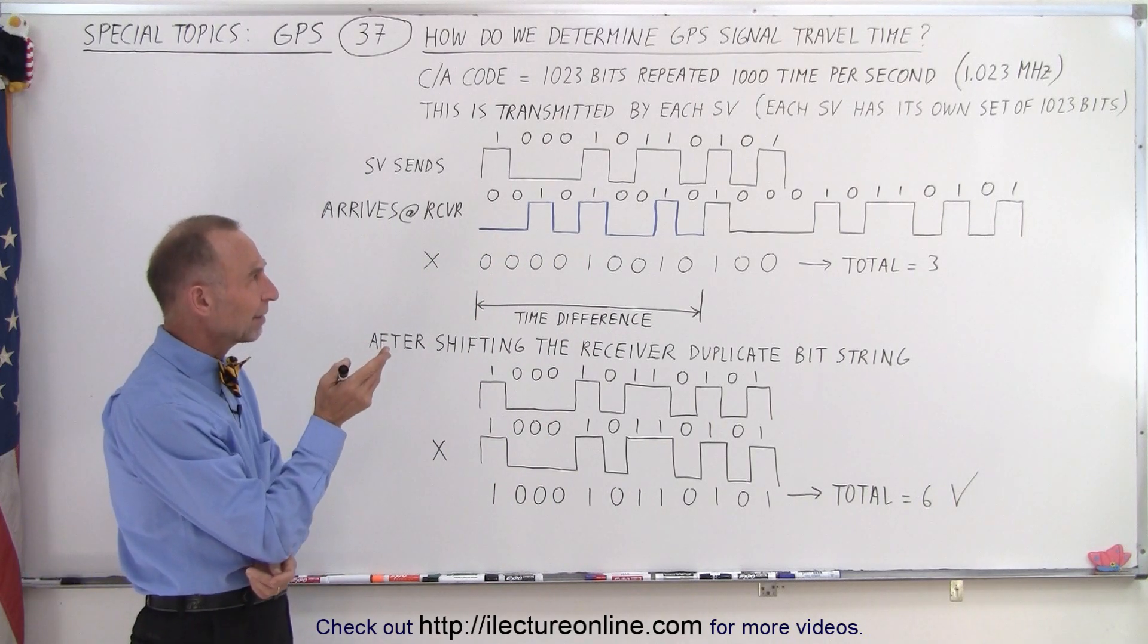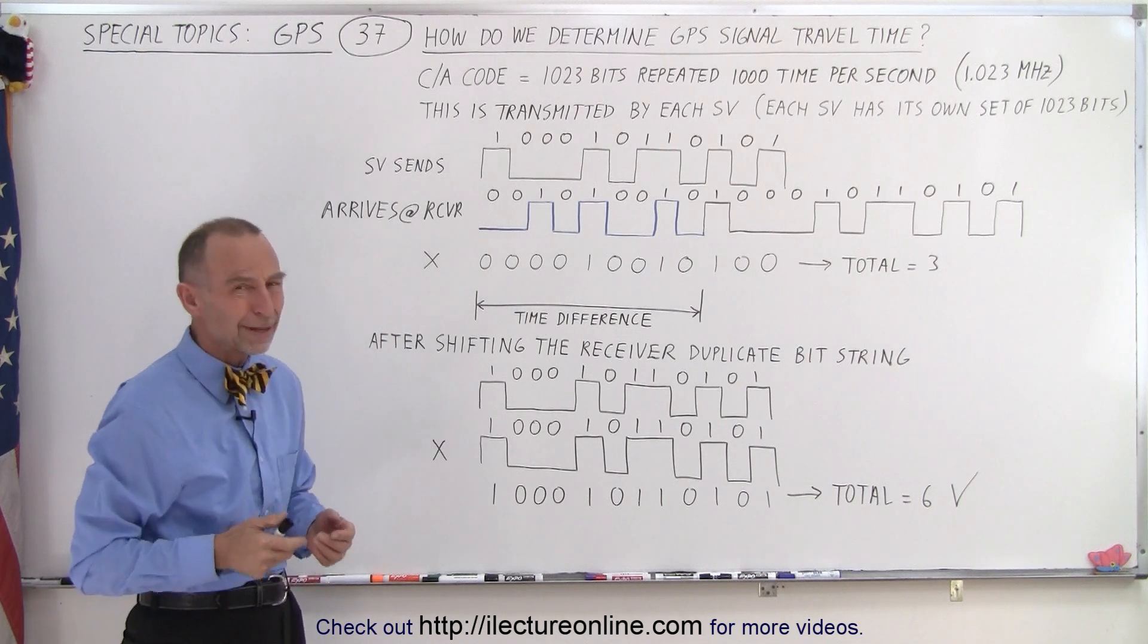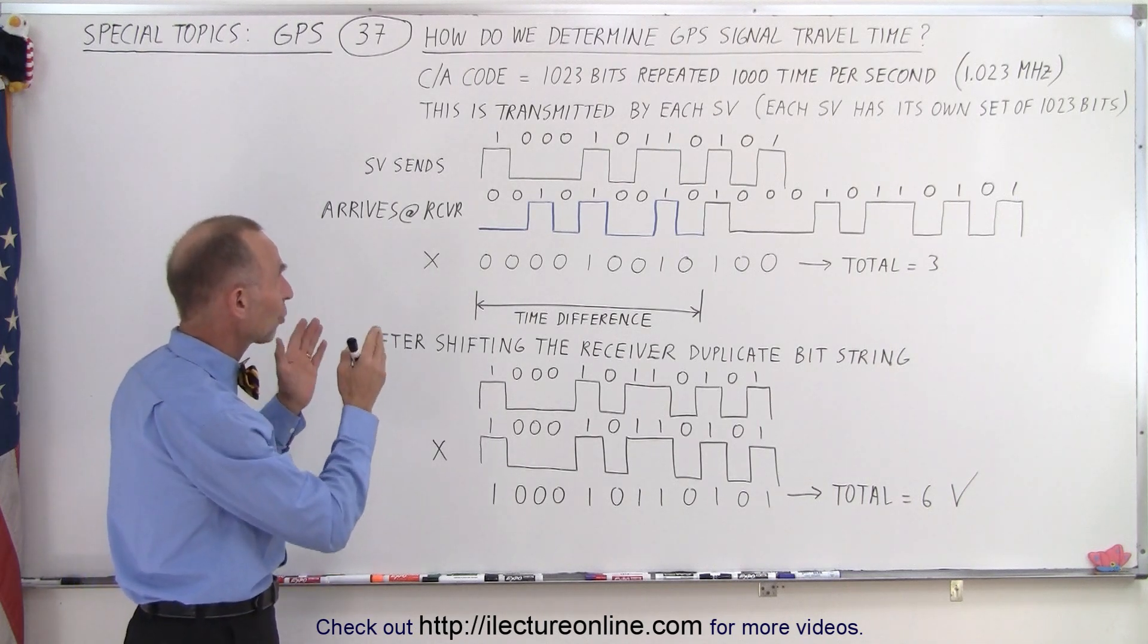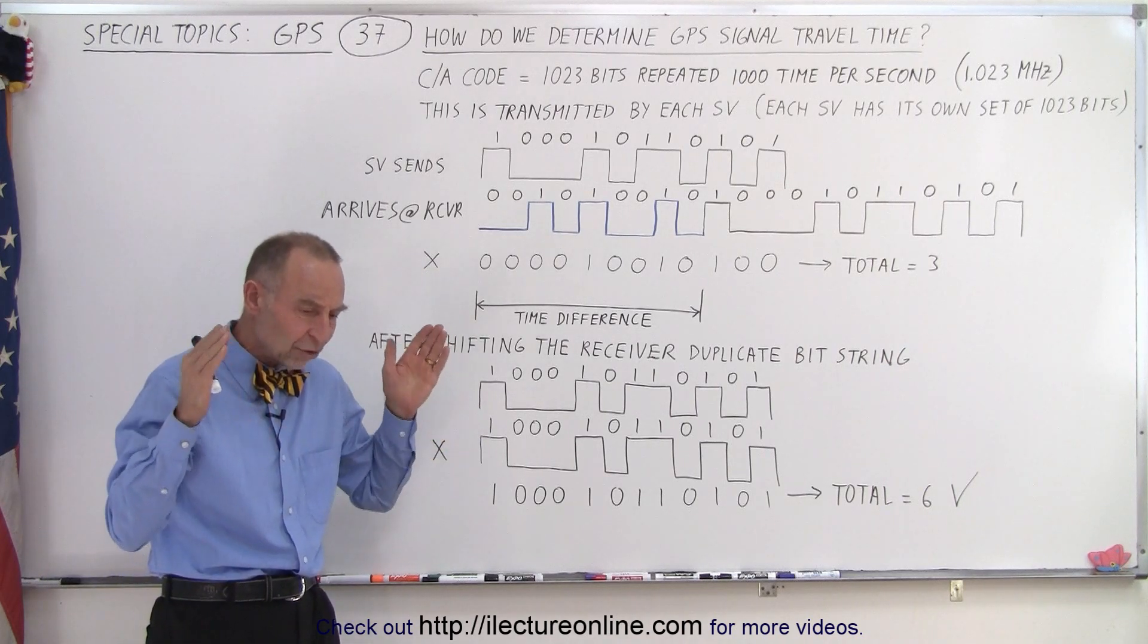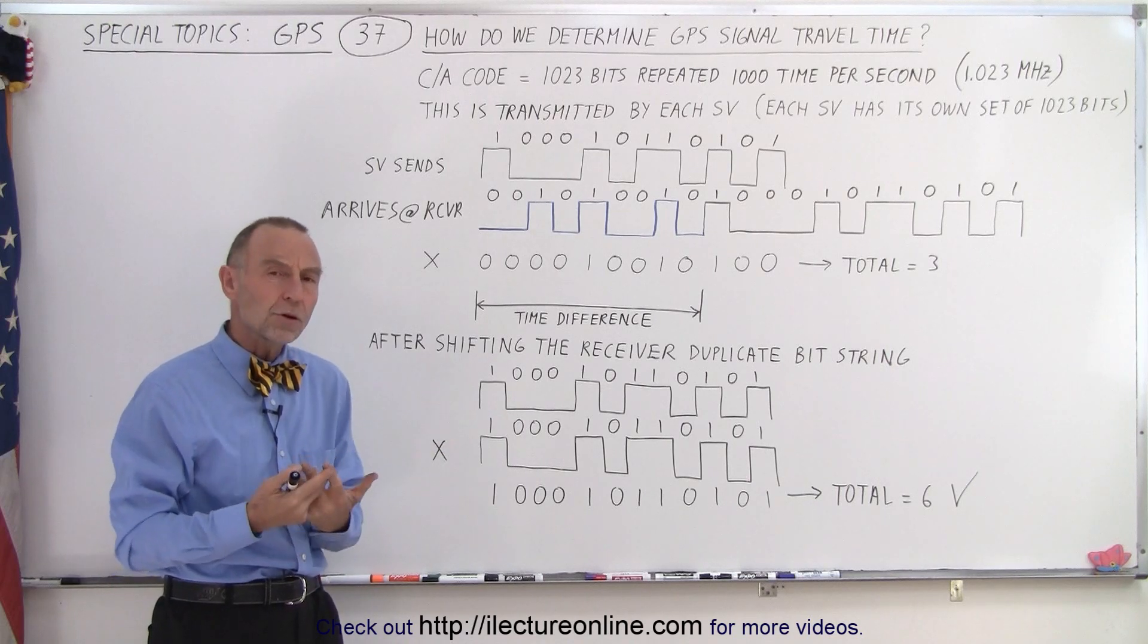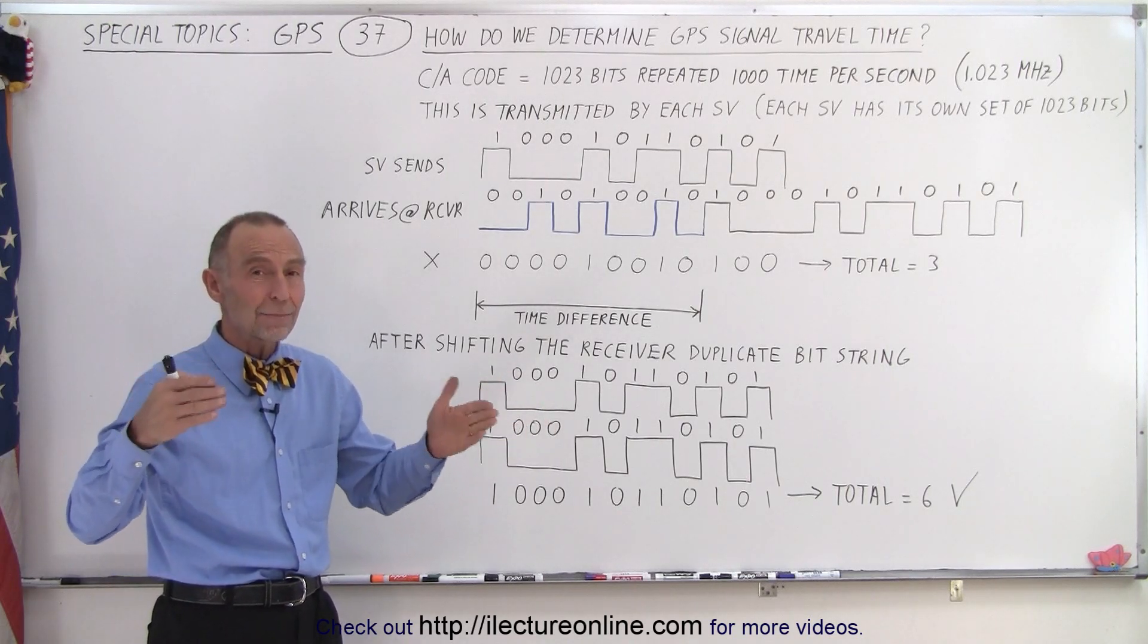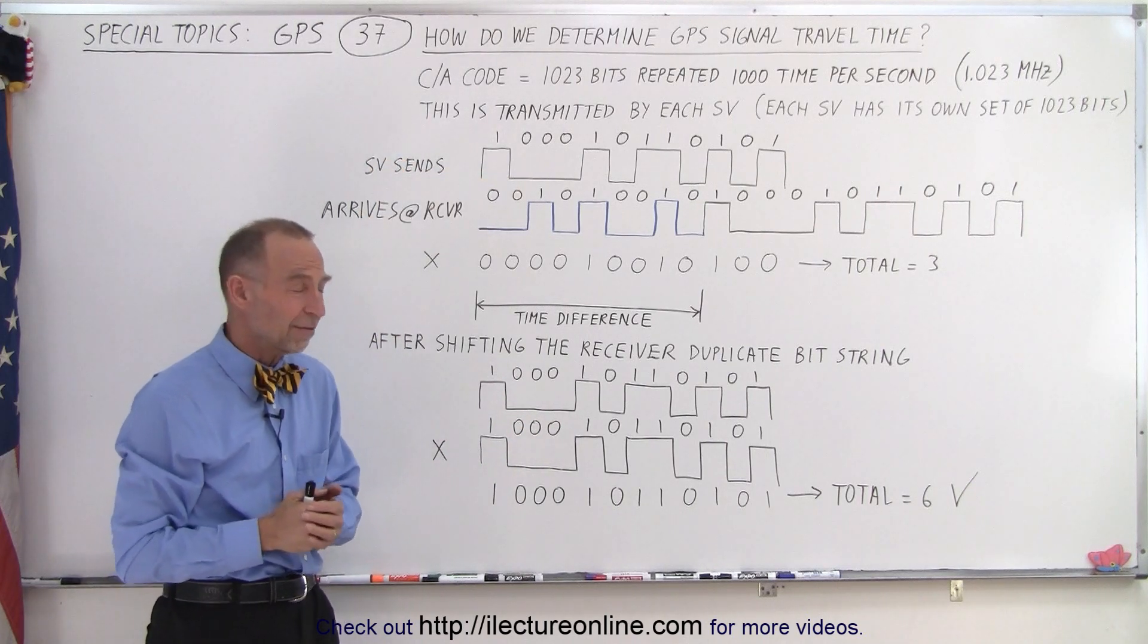Now it turns out that the frequency of this signal is 1.023 megahertz, it's 1023 bits repeated 1000 times per second, which means that each string of bits roughly represents one millisecond and we already knew that there's about a 70 millisecond time delay between the signal being sent and the signal being received.